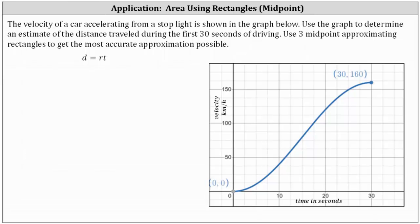Let's first mark off the interval from zero to 30 seconds. Because we're asked to use three approximating rectangles, we divide this interval into three equal subintervals. 30 divided by 3 is 10, so each subinterval has a width of 10 seconds.